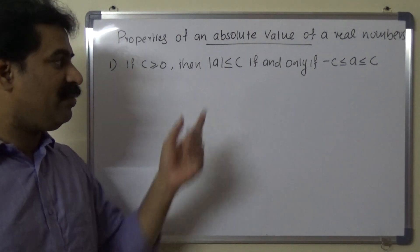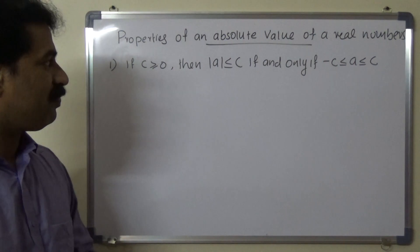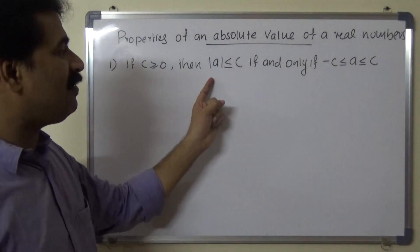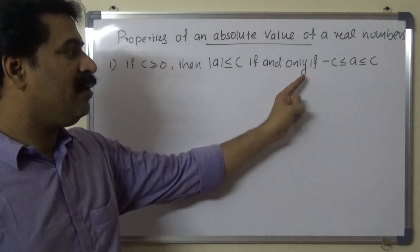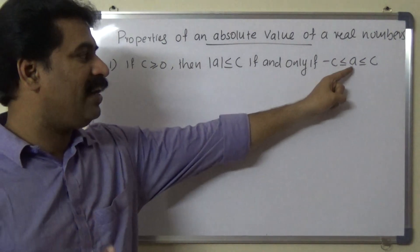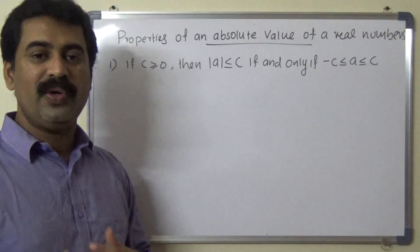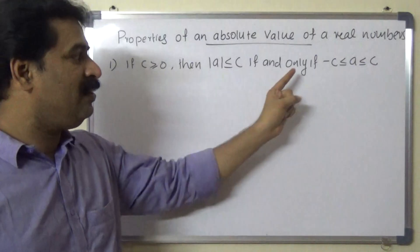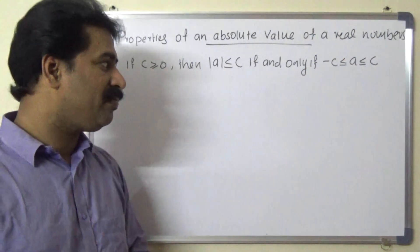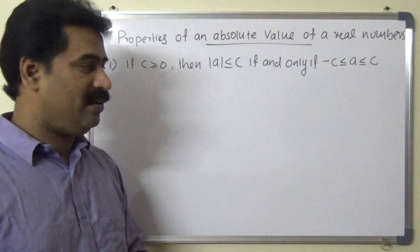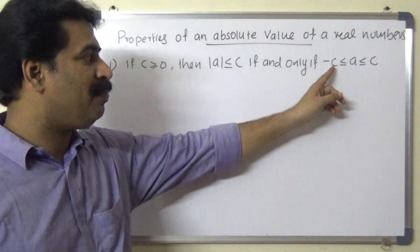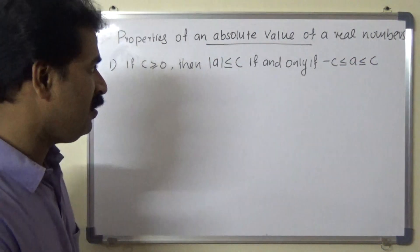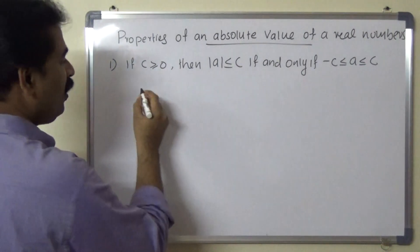After proving this result we will prove the second result. Here we have to prove modulus a less than or equal to c if and only if minus c less than or equal to a less than or equal to c. We need to prove two implications: the first implication is modulus a less than or equal to c implies minus c less than or equal to a less than or equal to c, then the converse part: minus c less than or equal to a less than or equal to c implies modulus a less than or equal to c. So first we assume modulus a less than or equal to c.